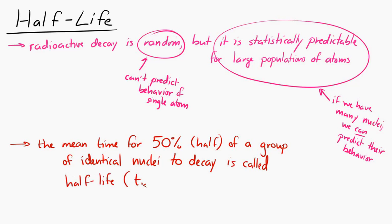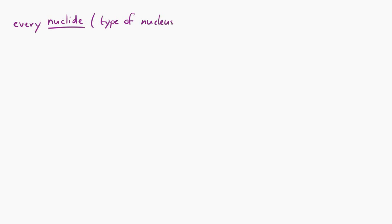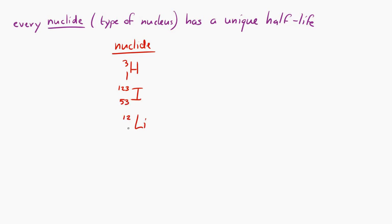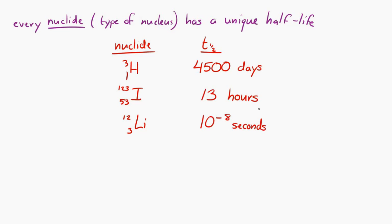Every nuclide — and nuclide is a new term referring to a type of nucleus — has a different half-life. For example, hydrogen-3 has a half-life of 4,500 days; iodine-123 has a half-life of 13 hours; and lithium-12 has a half-life of 10 to the minus 8 seconds. So very different amounts of time in each case. The half-life tells you the average amount of time it takes for half of those nuclei of that type to decay.